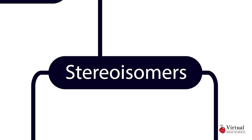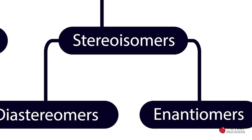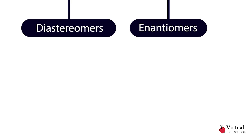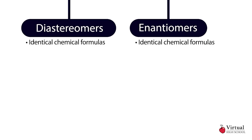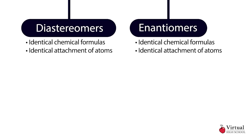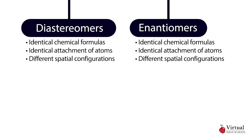Remember, stereoisomers are divided into two categories: diastereomers and enantiomers. Both have identical chemical formulas, attachment of atoms, and different spatial configurations. Diastereomers, however, are not mirror images, while enantiomers are mirror images.